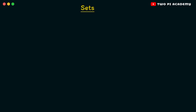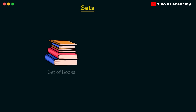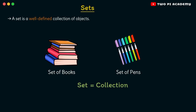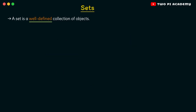We'll start with the general English meaning of the word 'set.' You may have heard sentences such as 'this is a set of books' or 'these are a set of pens.' So generally in English, a set refers to a collection of particular objects. The same is true in maths — a set is a well-defined collection of objects. But what does well-defined mean here? Well-defined means that the set is defined such that it does not vary from person to person.